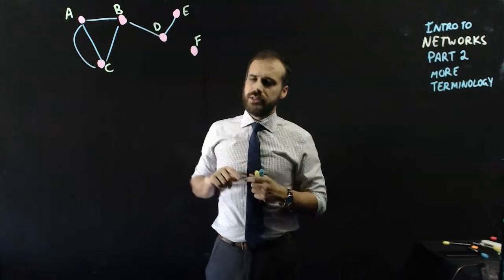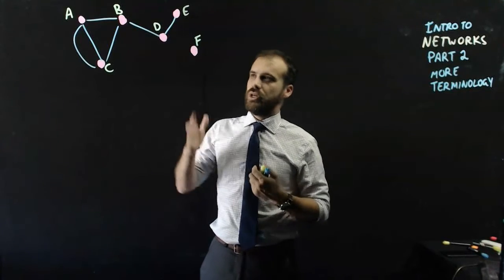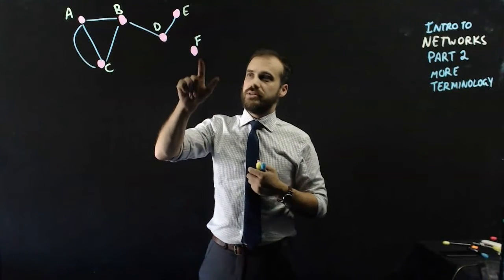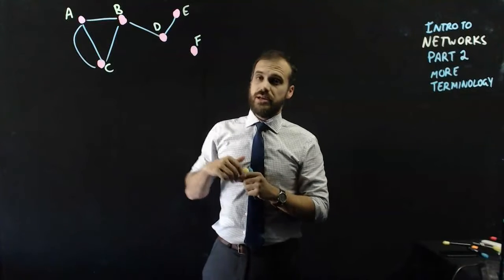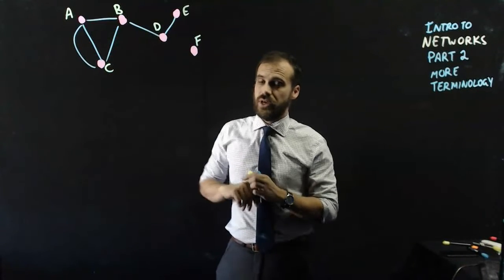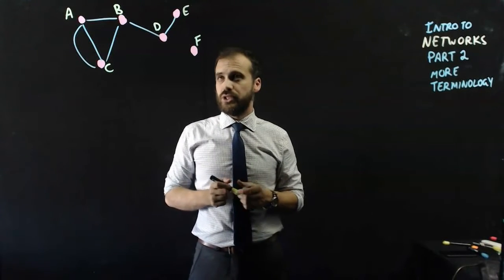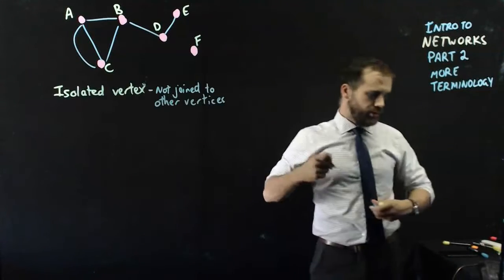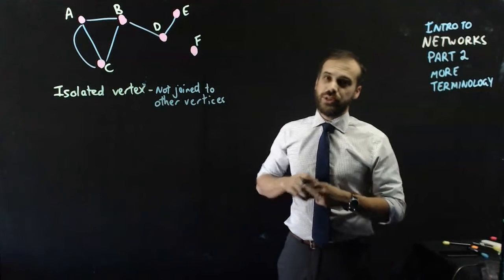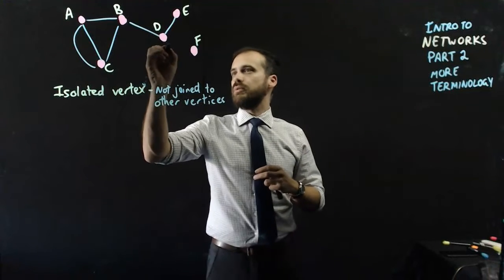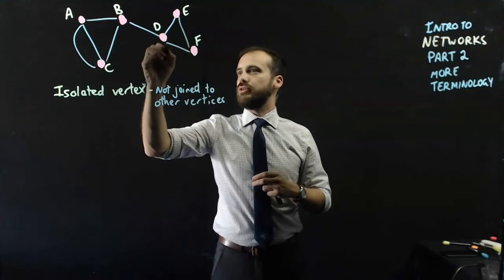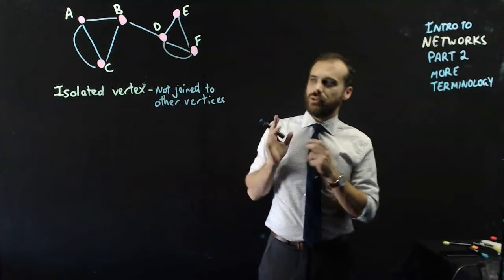If we stick with our towns terminology, this is a group of towns, and F, you cannot get from F to any of these towns, and you can't get from any of these towns to F. So our first little bit of terminology here is an isolated vertex. It's not joined to other vertices. That's a bit sad, so let's build some roads.